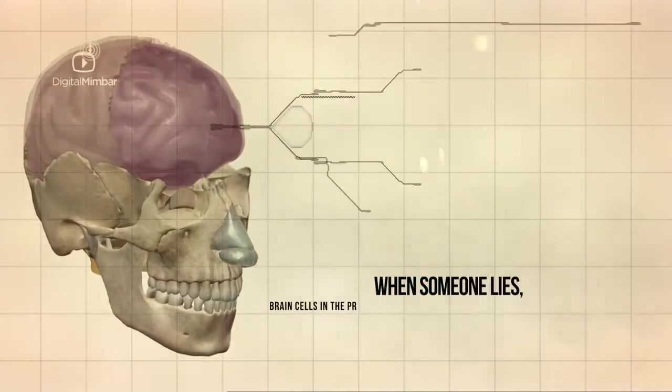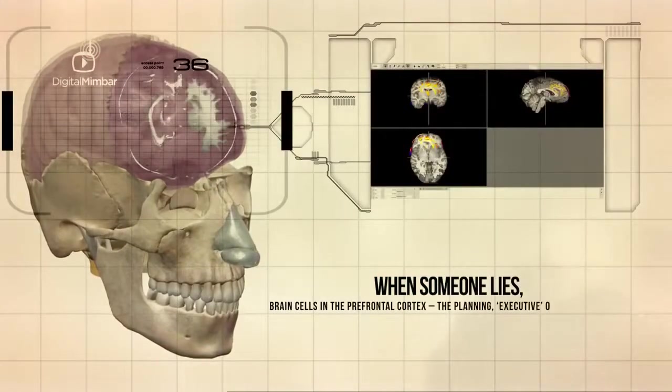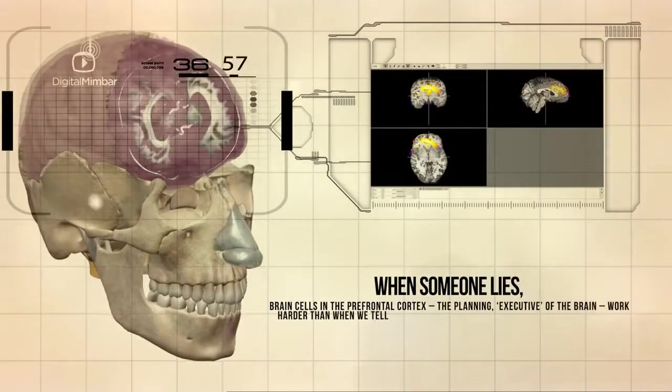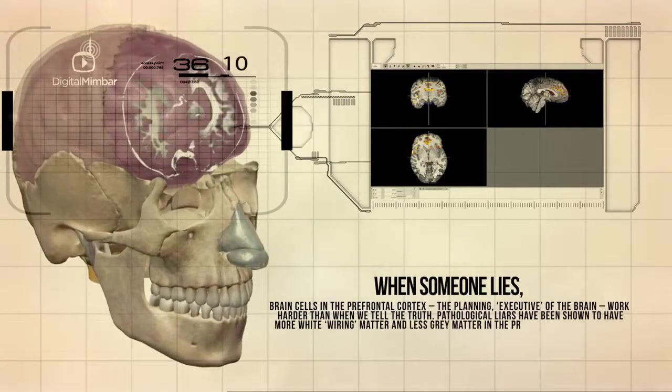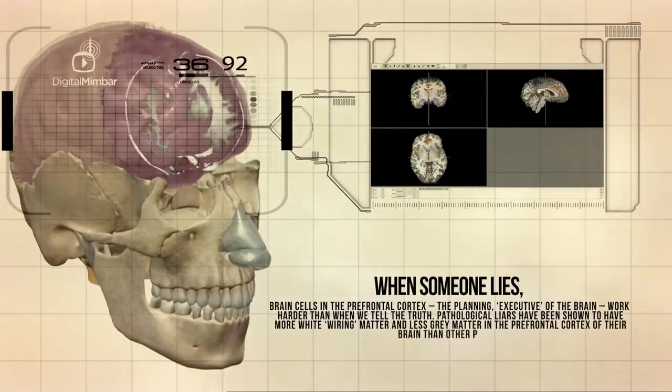When someone lies, brain cells in the prefrontal cortex, the planning executive of the brain, work harder than when we tell the truth. Pathological liars have shown to have more white matter and less grey matter in the prefrontal cortex of the brain than other people.